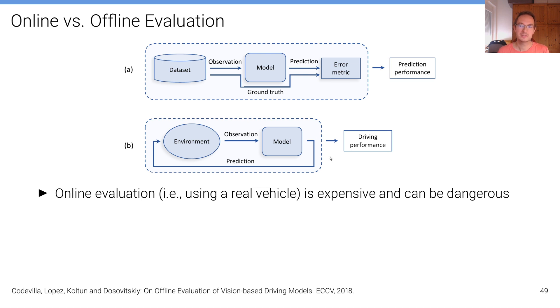The online setting is illustrated here at the bottom where we have the environment that generates an observation that's input to the agent, to the model, and the model makes a prediction or an action actually, and then this influences again the environment. And so we have this loop and based on the model driving in the real world we can measure how successful it is. How often and how fast does it reach its goal? How many infractions does it incur?